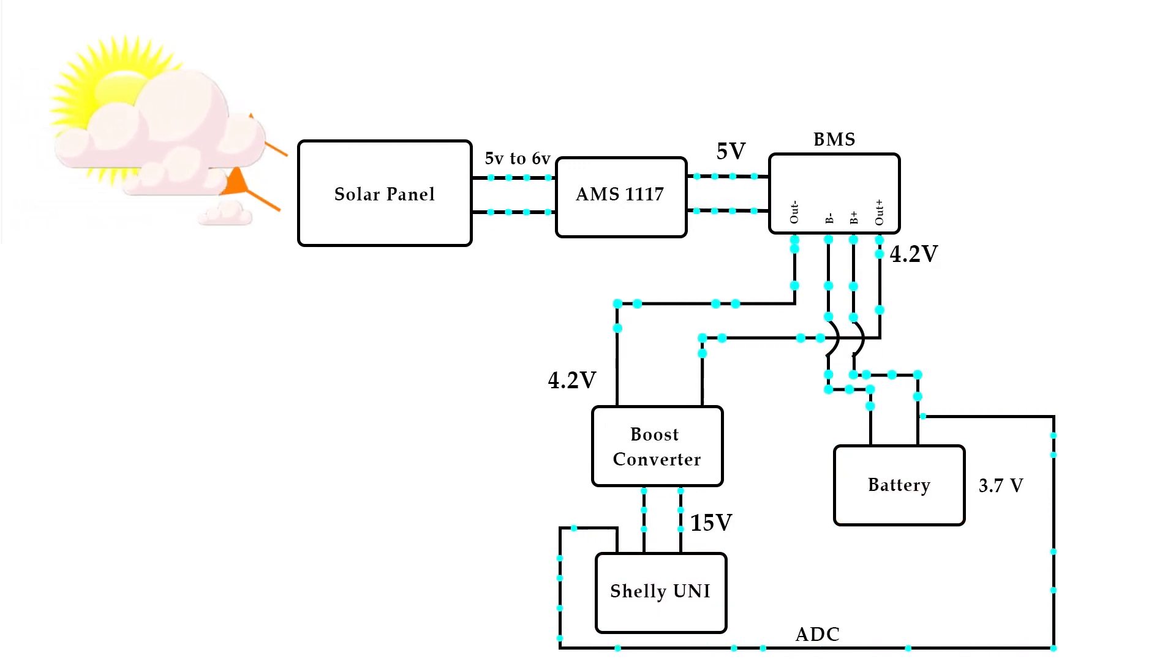While running the Uni on this setup, the battery level remained between 2.8V to 3.7V even with clouds in the sky. This shows that the Uni consumes low power.